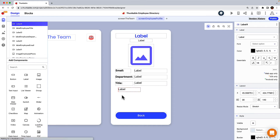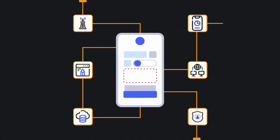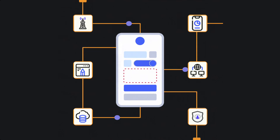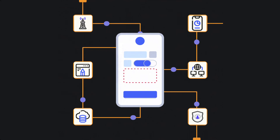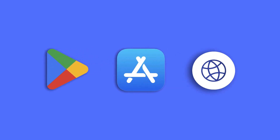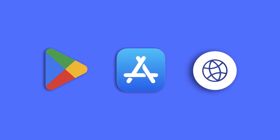Thunkable is changing the way people build apps by making native app development accessible to everyone. With extensible integrations, open APIs, and advanced editing capabilities, you can create a powerful app in days, not months, and publish it directly to Google's Play Store, Apple's App Store, or the web.